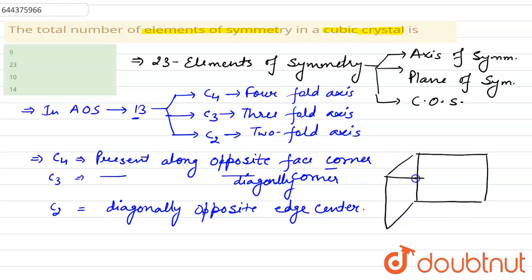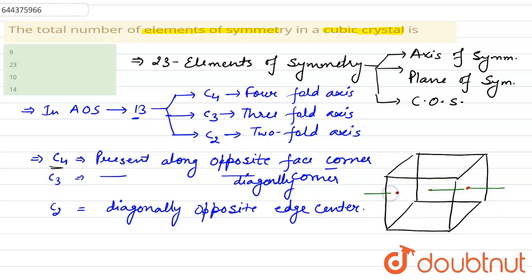This is a cube. First of all we will see C4, which is present along opposite face centers. This is a face center, this is a face center, and this is the body center, so the axis passes through opposite face centers. There are six face centers, and two face centers share one axis, so there will be three C4 axes.